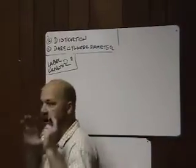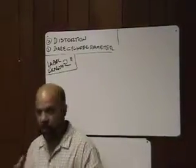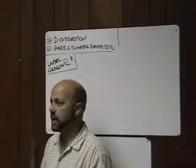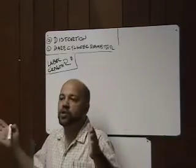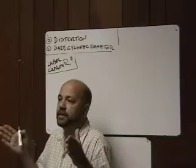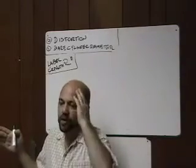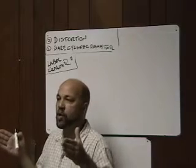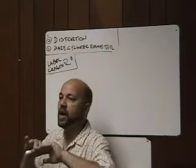There's another thing that we face in flexo that you guys don't face in offset, is called distortion. Distortion is pre-shrinking a plate. To distort a plate for this purpose is to pre-shrink it by a predicted and correct amount.